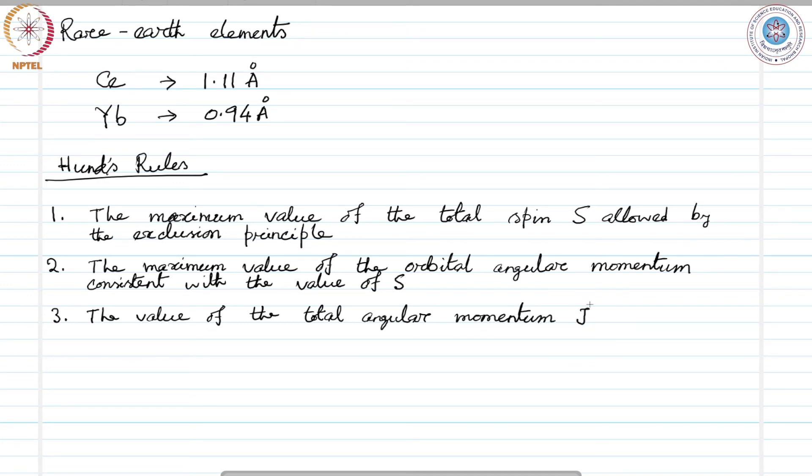Number 3 is the value of the total angular momentum J, that would be equals L minus S absolute value for less than half filling, and it would be equal to L plus S for more than half filling. The first rule comes from the exclusion principle, Pauli exclusion principle, and Coulomb repulsion between electrons.